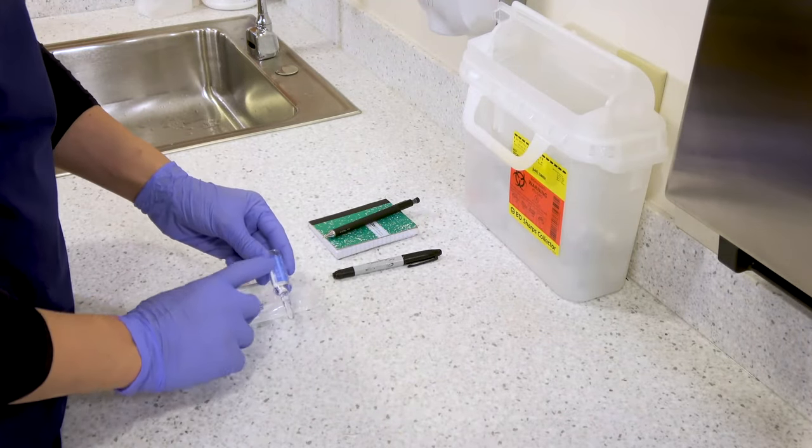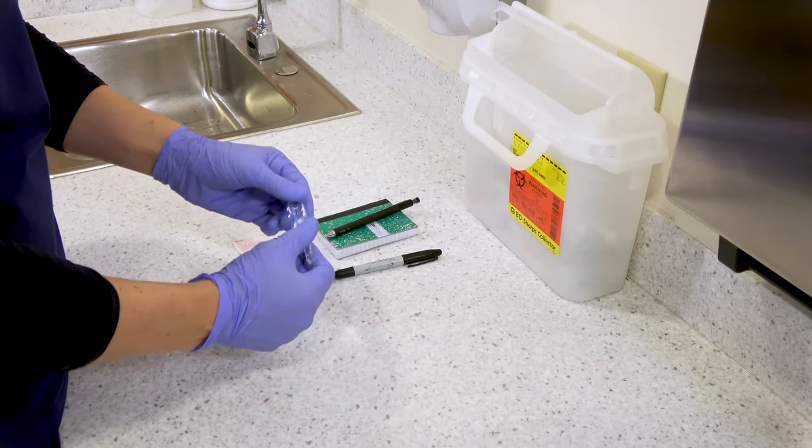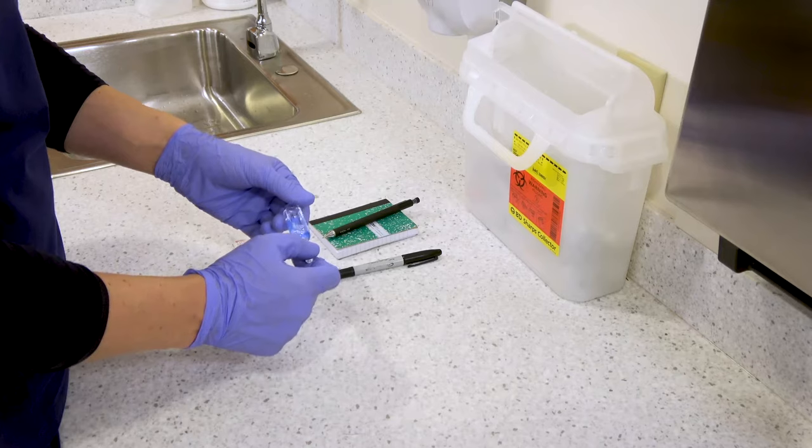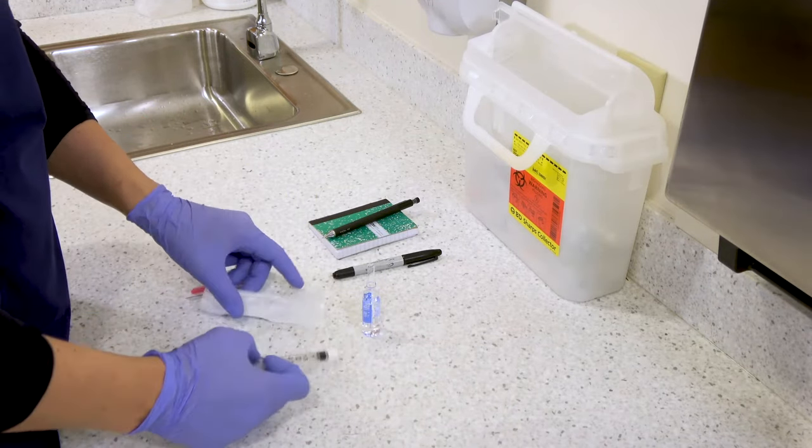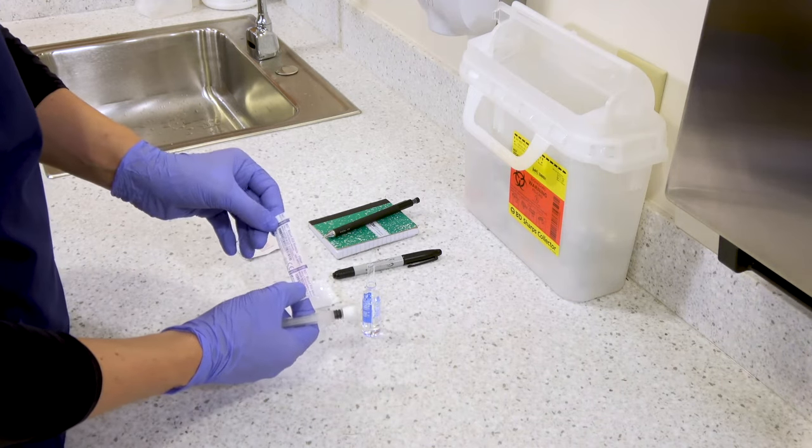So of course, the first step as with any medication administration is to calculate the required volume of medication needed. Look at the vial and do your dosage calculation. In this case, let's say that we have calculated that we need two milliliters.